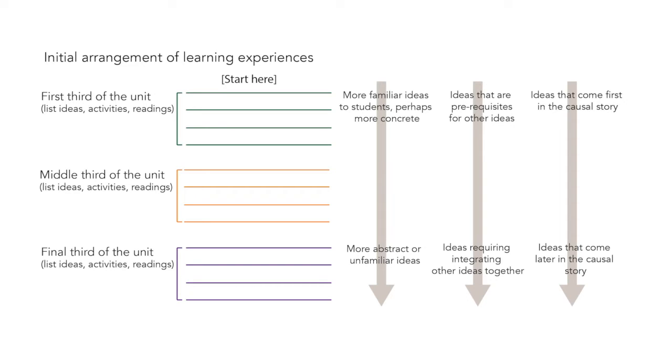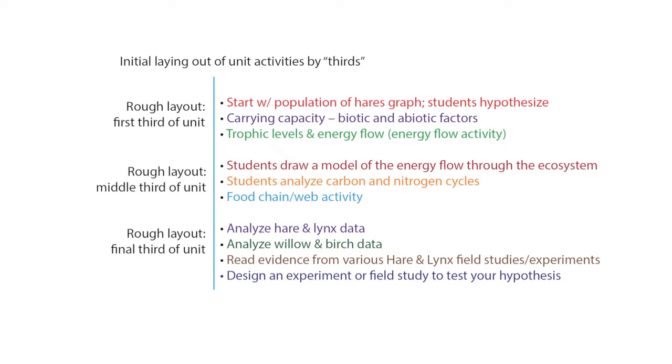Starting with the left hand arrow, you could begin the unit with more familiar ideas to students, perhaps ideas that are more concrete. Later in the unit, you would address more abstract or unfamiliar ideas. The middle arrow suggests that ideas that are prerequisites for other ideas could lead off the unit. Then later in the unit, one could address ideas that require the integration of these more basic concepts learned earlier in the unit. The third option requires that we think about the flow of the causal story or explanation. There are some ideas that come first in this causal story; perhaps they could come first in the arrangement of the unit. Here is the way that our biology teacher Bethany has laid out her sequence of ideas, activities, readings, and investigations.